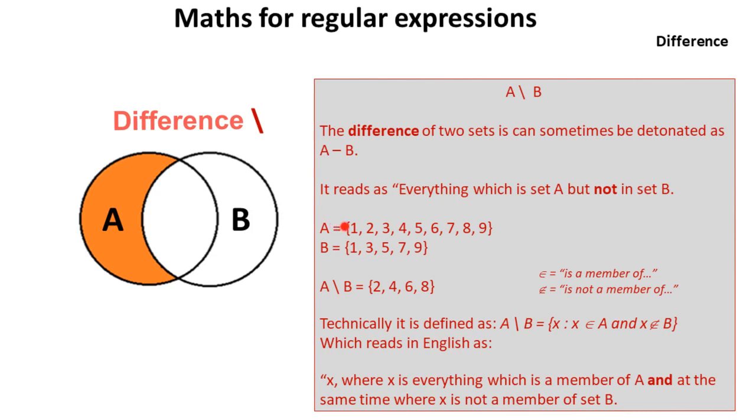So if we look at set A, which has these values, and set B that has these values, it's everything which is in this set, but not in this set. So we'd end up with 2, 4, 6 and 8.